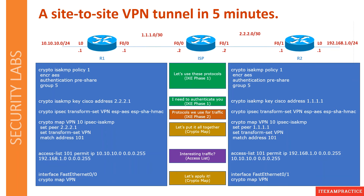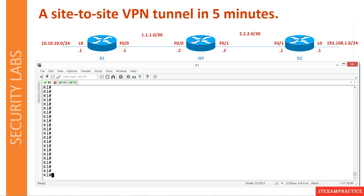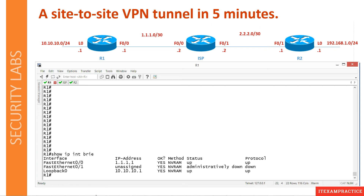Now let's connect to R1 and R2, paste everything, and see if it works. Running 'show ip interface brief' on R1, we can see that F0/0 is our public IP address 1.1.1.1. I am using a loopback interface to simulate my local area network, which is 10.10.10.0, with the IP address ending in .1.